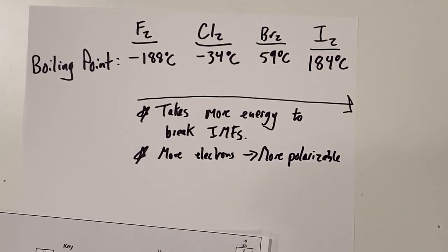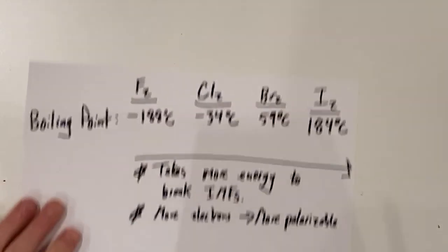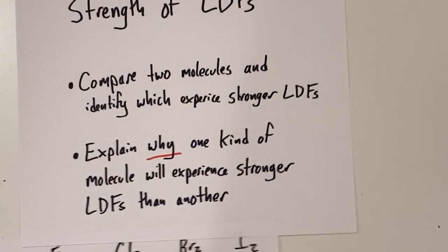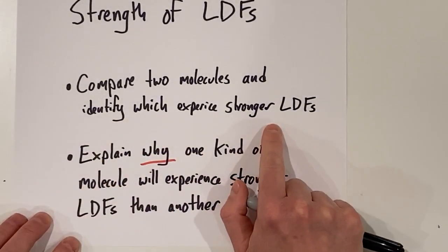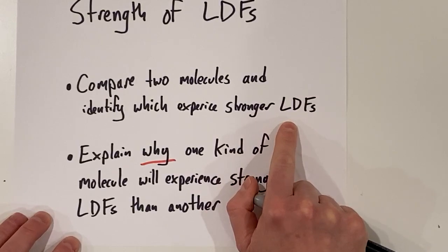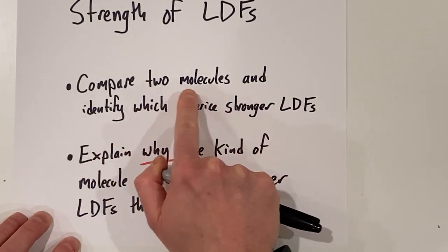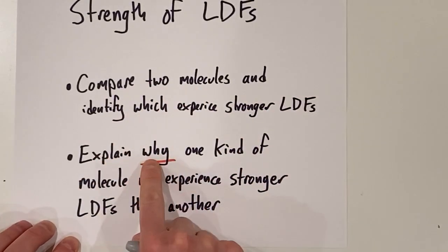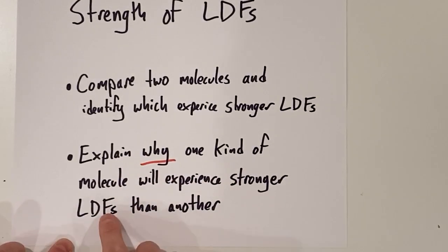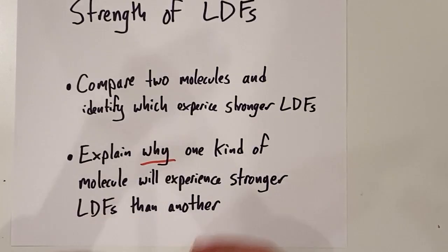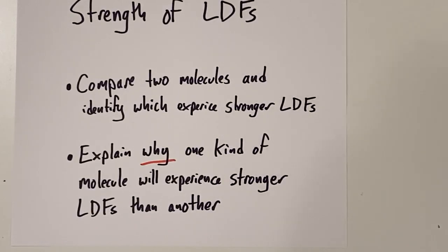Hopefully what we've been able to do in this video is compare two molecules and identify which experiences the stronger London dispersion forces — it's going to be the molecule with the most electrons. We can also explain why: the more electrons we have, the more polarizable our molecule is, and therefore the stronger intermolecular forces it will experience.